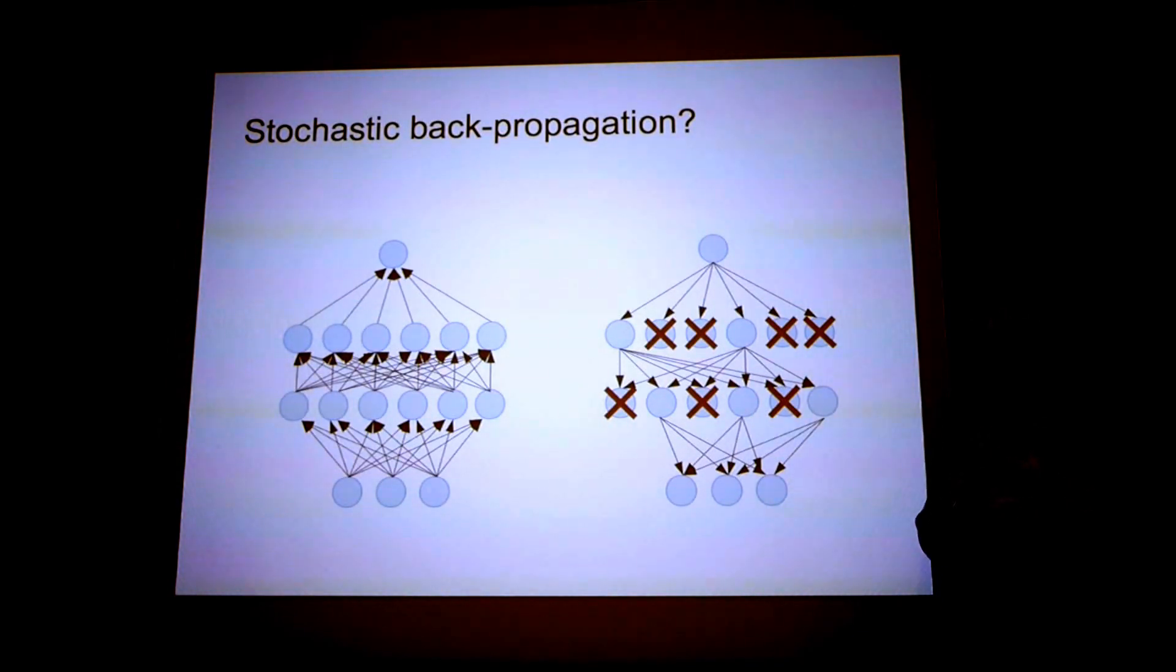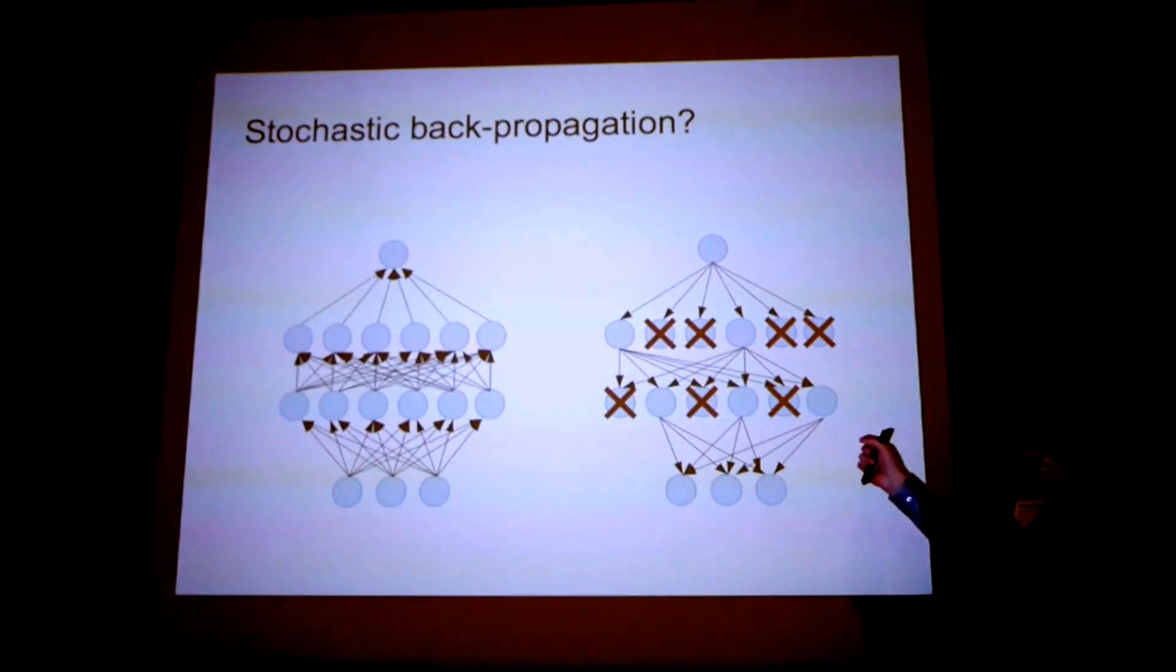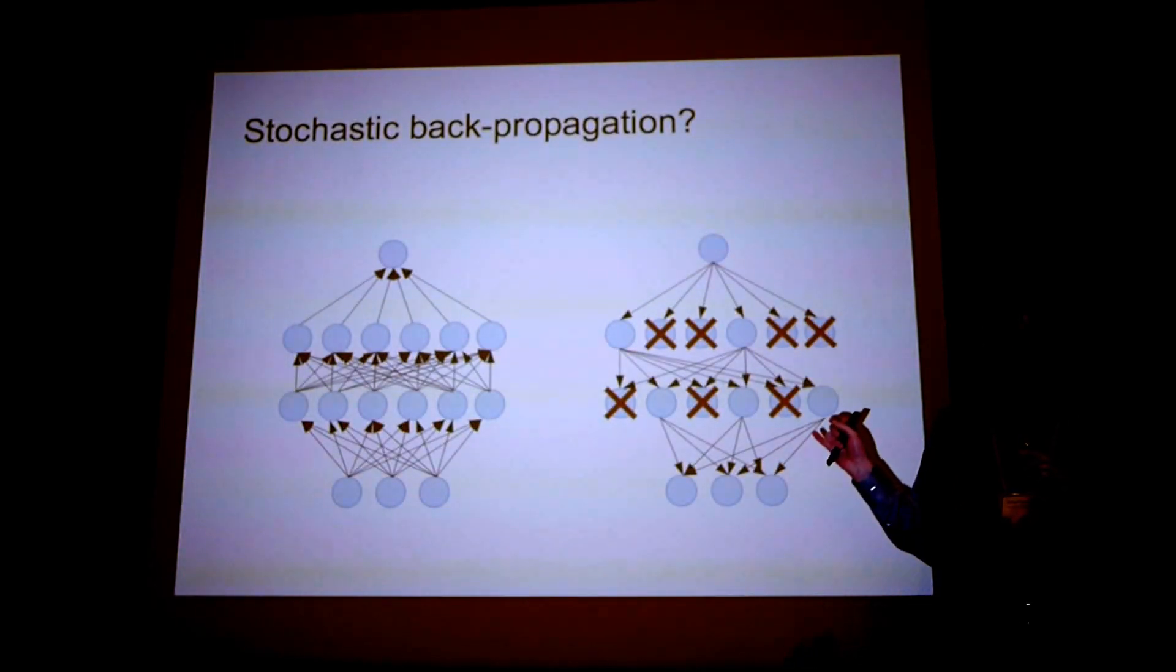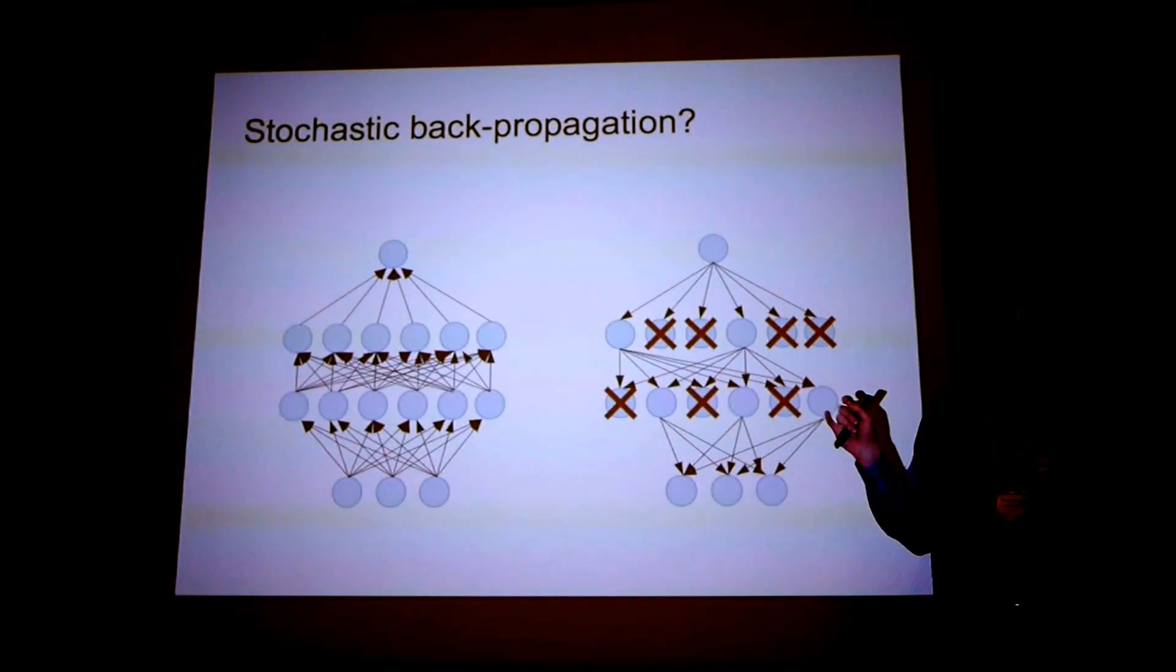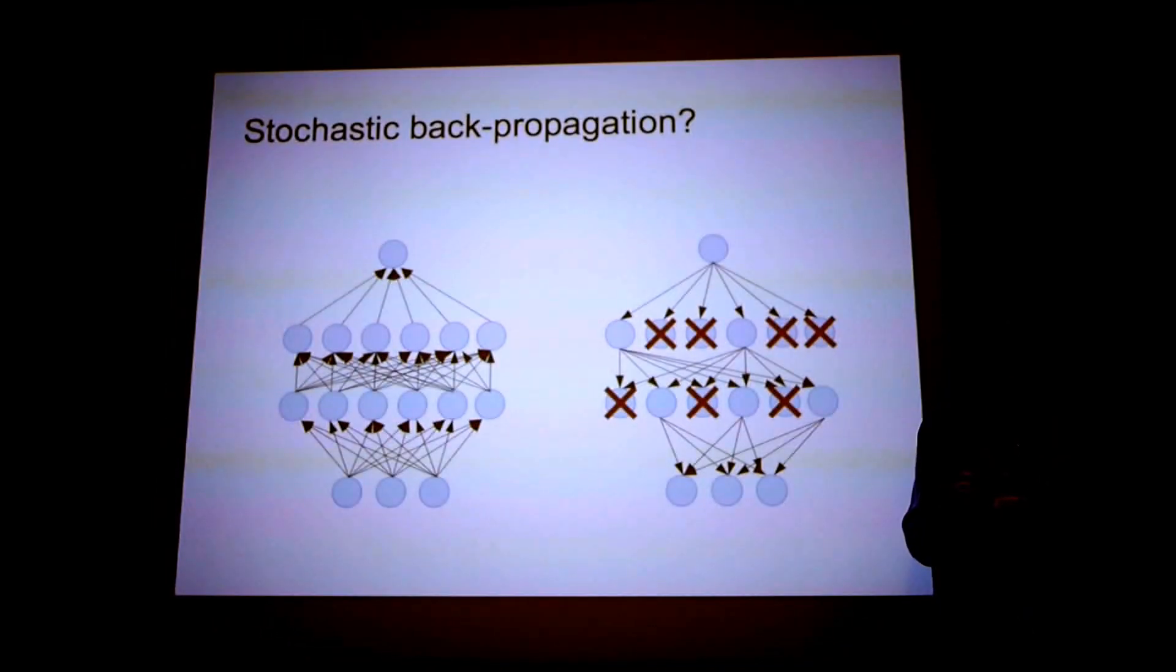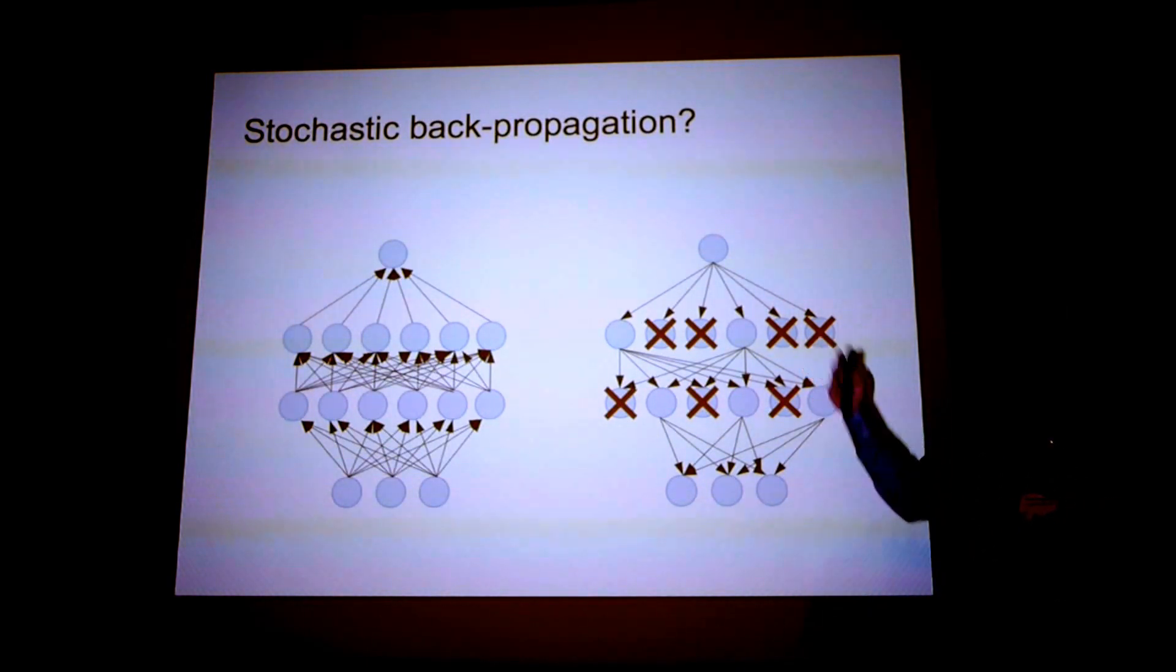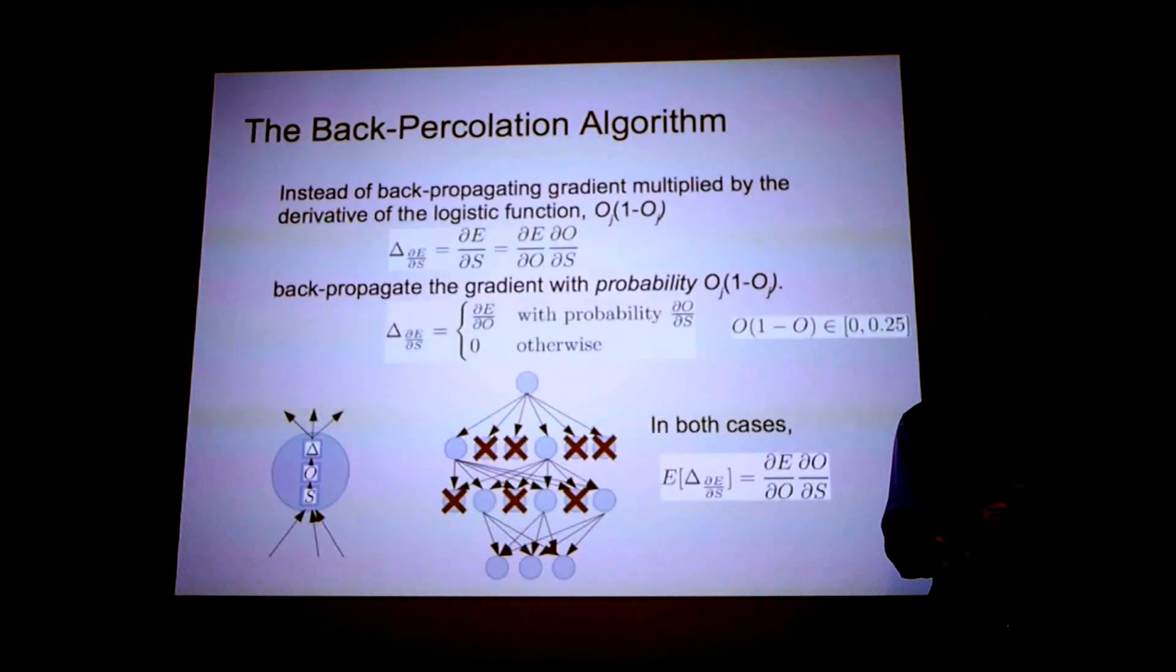Now, we're going to do this in a particular way such that the gradient update for each weight is exactly the same as gradient descent in expectation. So it's going to be a stochastic back propagation, but in expectation each weight is going to get the true gradient update. And we call this algorithm back percolation because we're percolating the gradient through the layers.